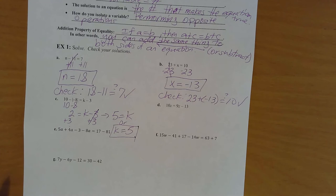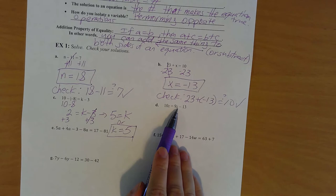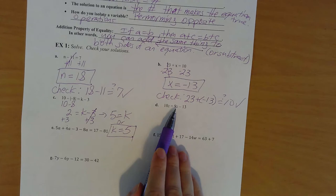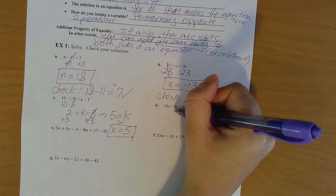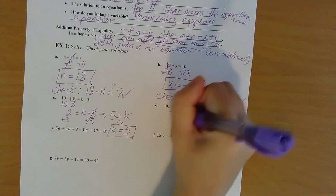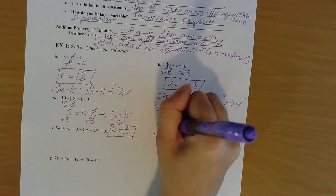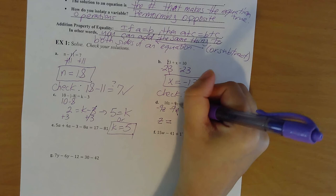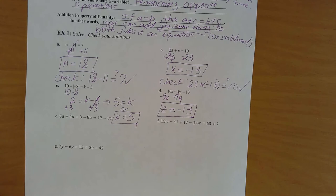In part d, I have 10z equals 9z minus 13. This is the first one with variables in different spots, so I want to get all the z's in one place. I have 10z on the left and 9z on the right. If I subtract 9z from both sides, I won't have any z on the right side, and 10z minus 9z gives me 1z on the left. So z equals 0 minus 13, which is negative 13.